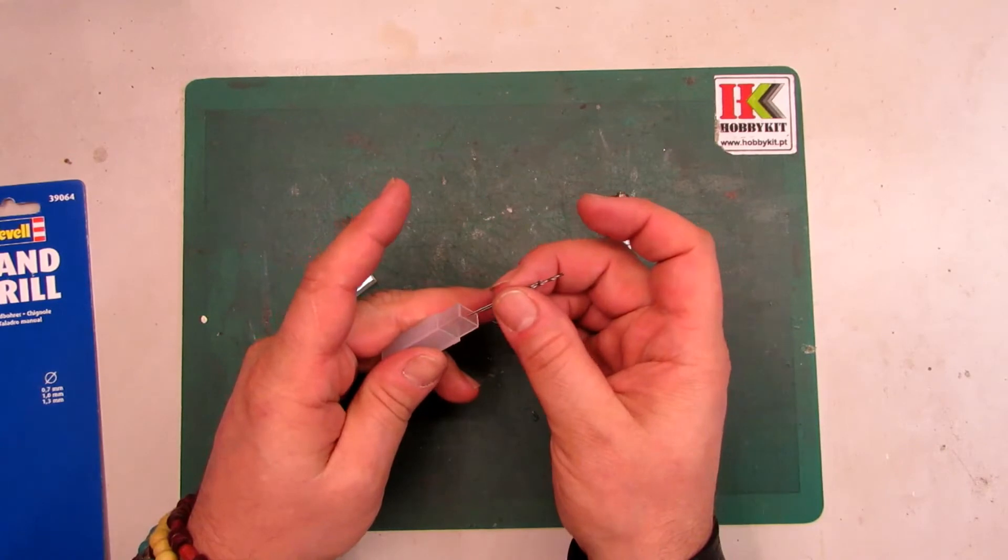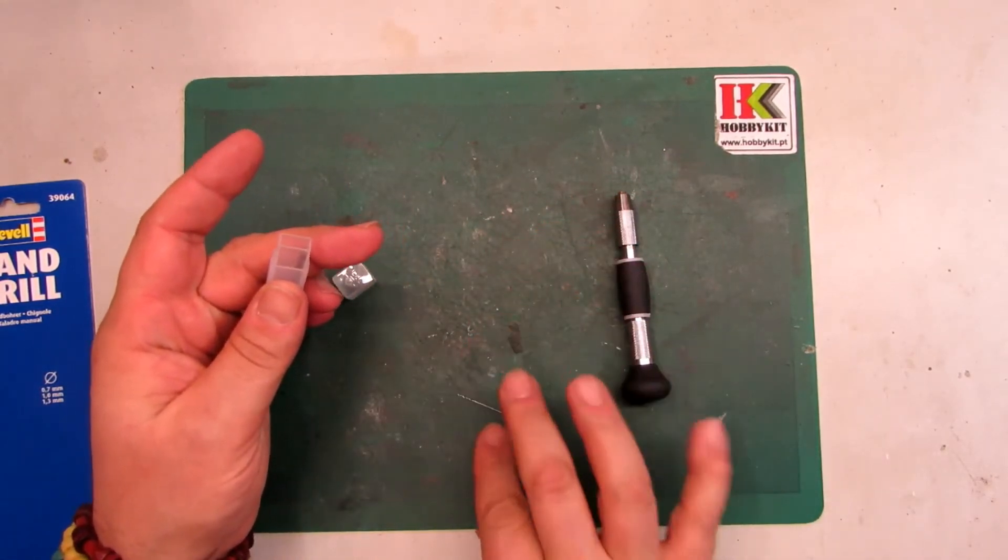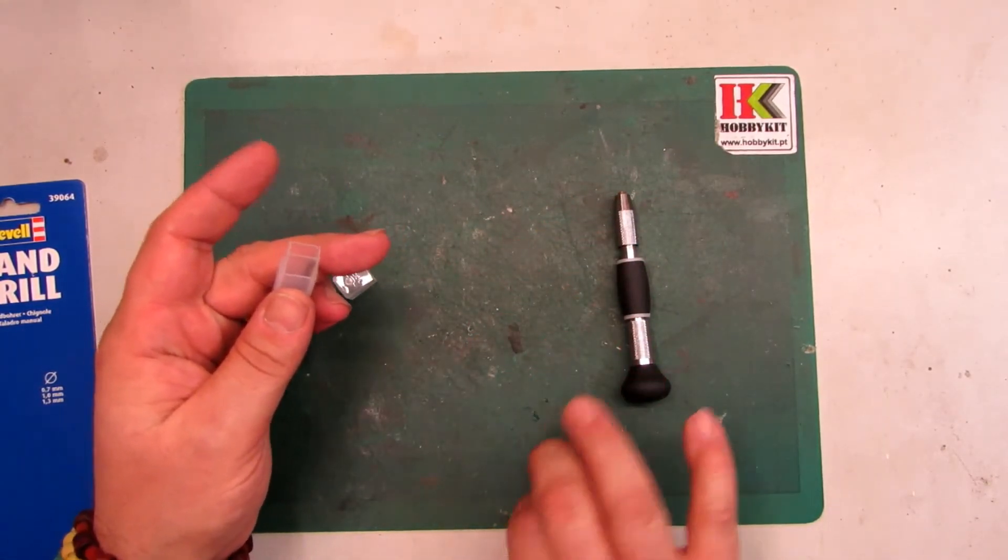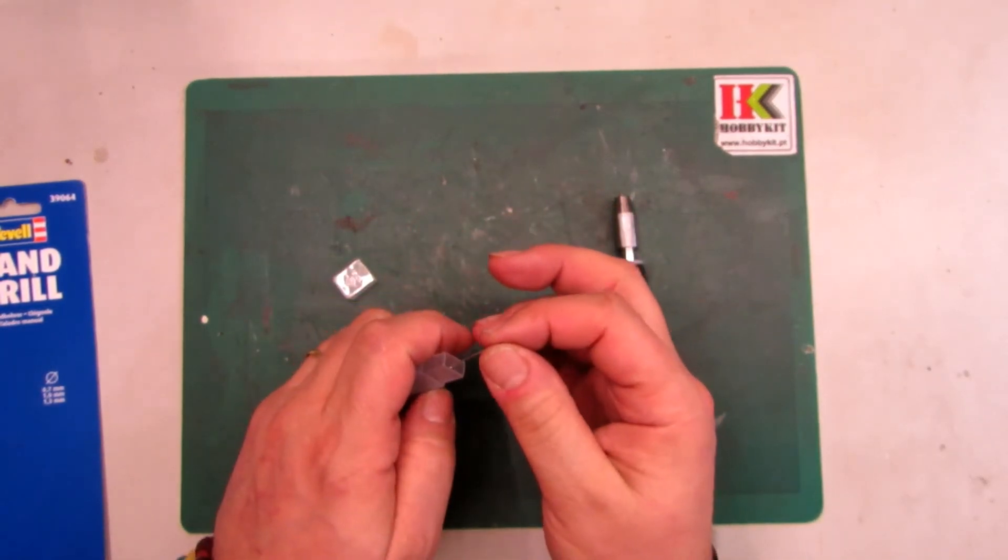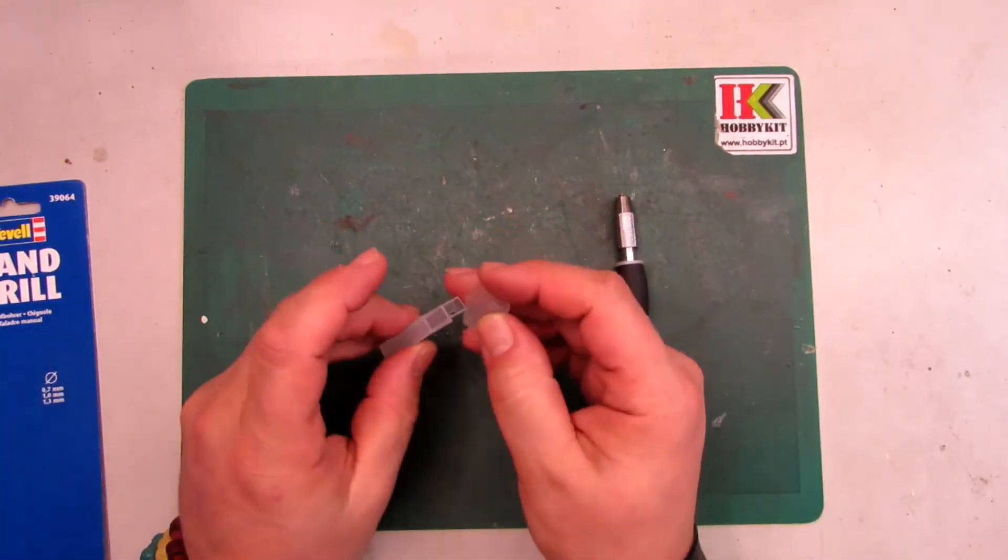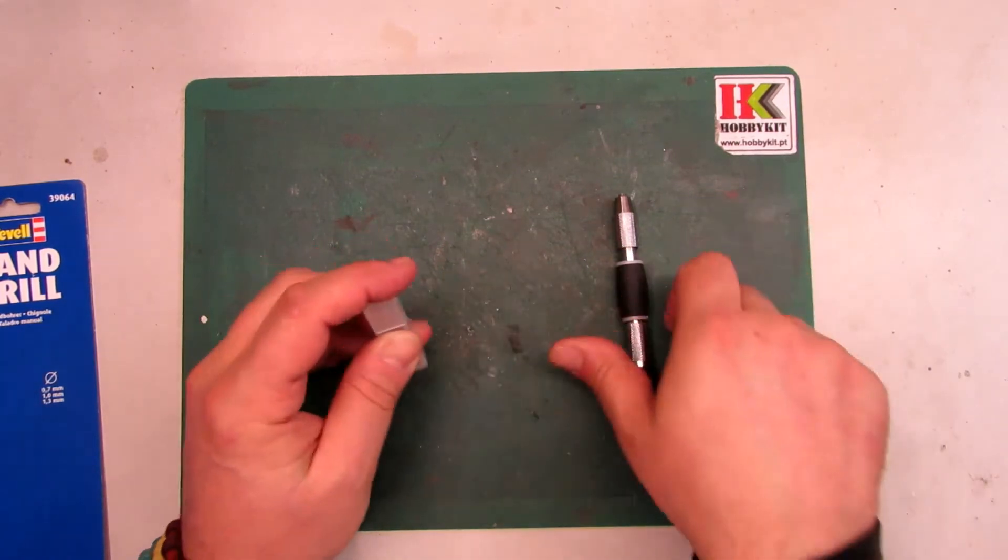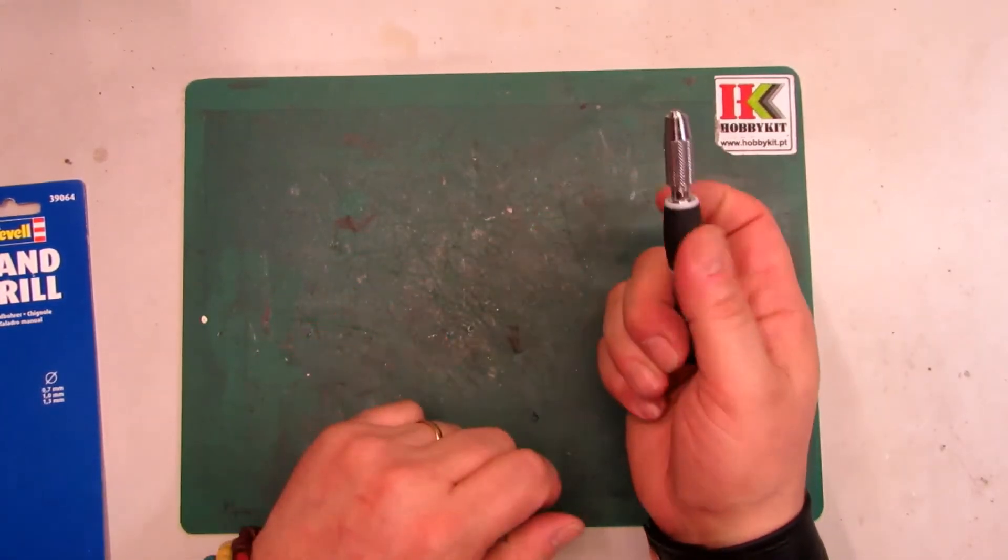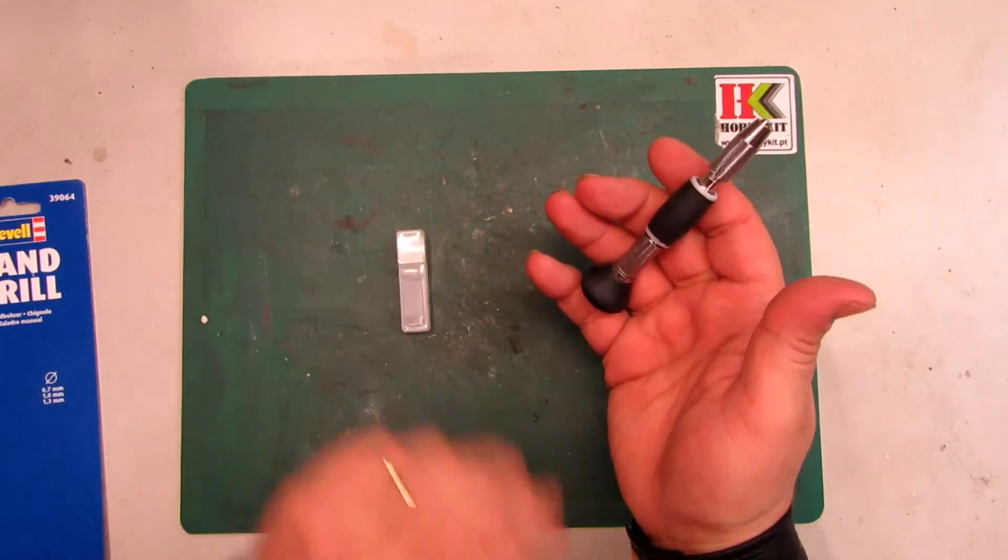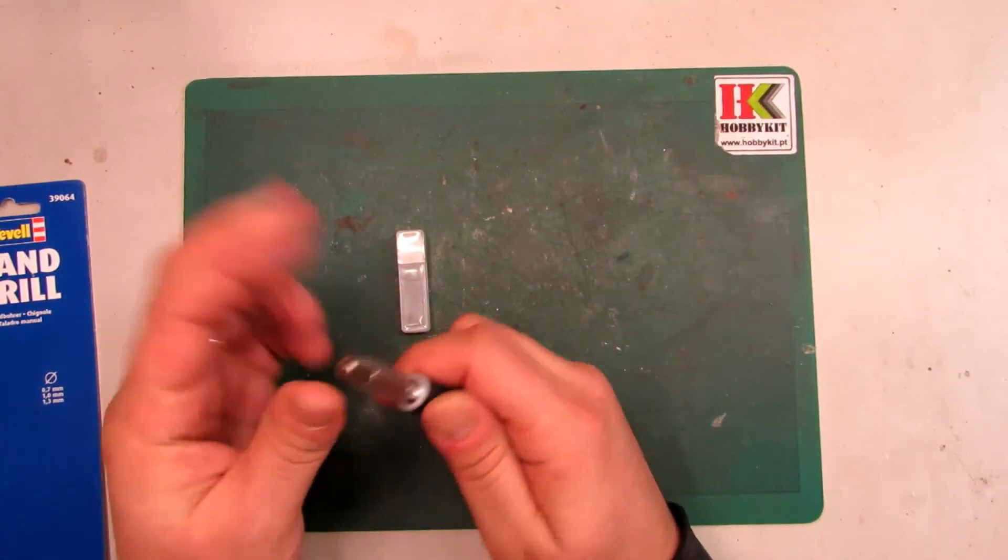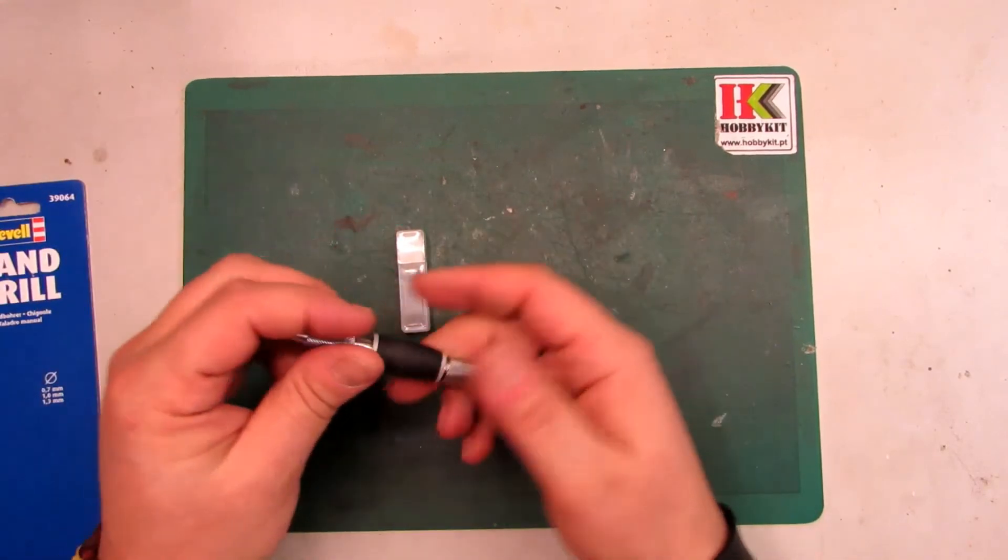So you have this little box, you can put it. If you think you need a bigger one or more small ones, just go to your hobby store. If you buy this hand drill from Revell, you can buy the other sets they have with lots of drills. And you can put other brands here.